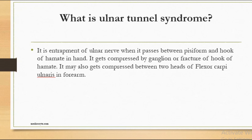Ulnar tunnel syndrome is the entrapment of the ulnar nerve when it passes between the pisiform and hook of hamate in the hand. It gets compressed by a ganglion or fracture of the hook of hamate, and may also be compressed between the two heads of flexor carpi ulnaris in the forearm.